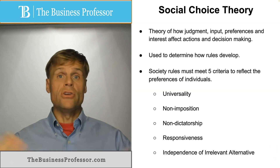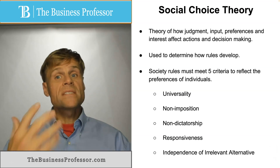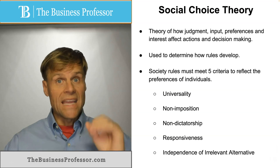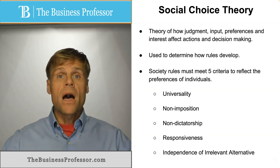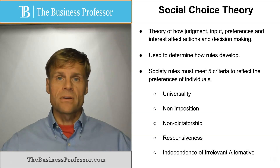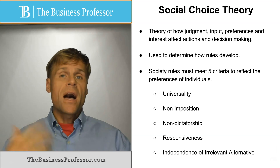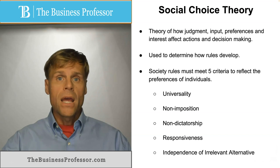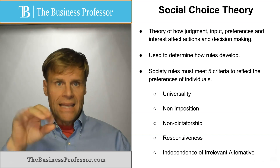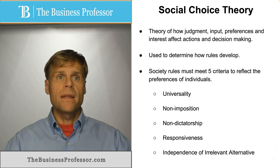Generally, the rule must be universal — meaning it's applicable to everyone. It must be non-imposing, meaning it doesn't individually hinder certain people. And it must be non-dictatorial, meaning it's not mandated by an individual at the top collectively on everyone.